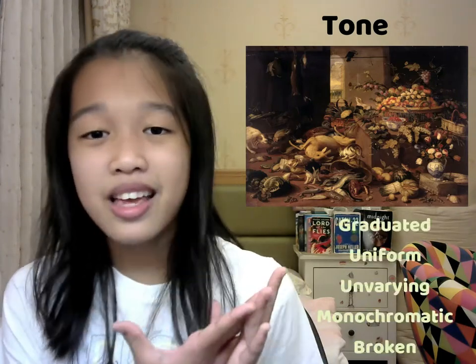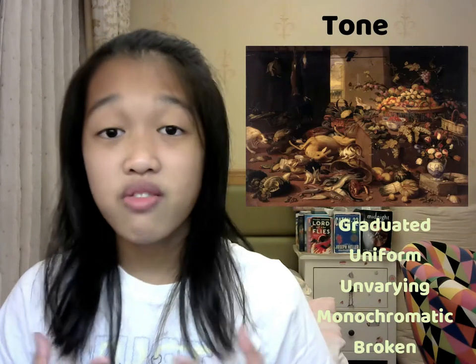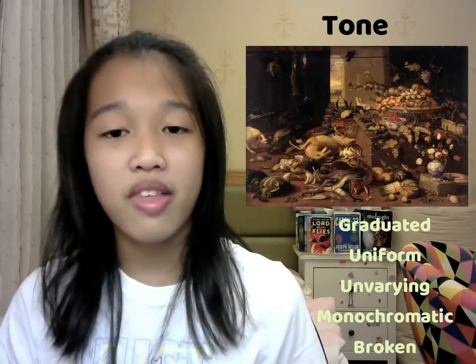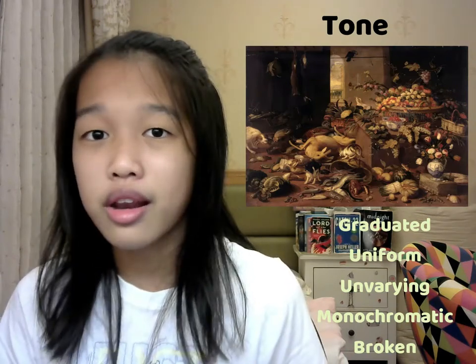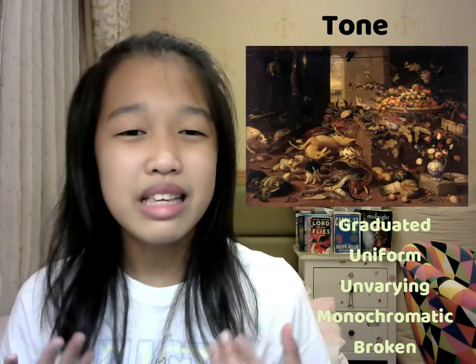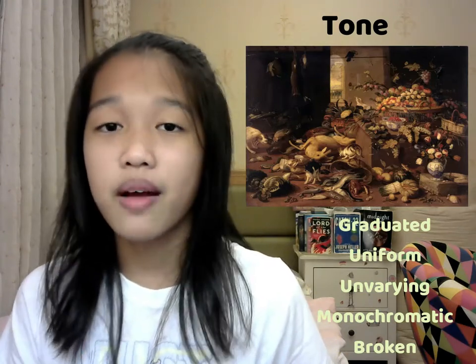Our next element is tone. Look at this painting — what is the tone? Tone means how the artist received and rendered this painting. The tone might be graduated here, moving from brown to blackish colors, and it is graduated and smooth. It is also uniform — tidy — even though the composition is not tidy. That's an oxymoron, note that down. The texture is unvarying, only from white to brown.